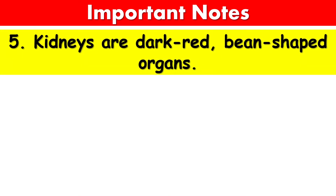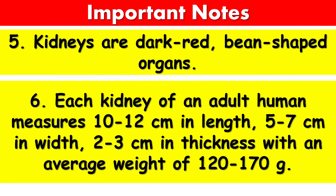Kidneys are dark red bean-shaped organs. Each kidney of an adult human measures 10 to 12 cm in length, 5 to 7 cm in width, and 2 to 3 cm in thickness, with an average weight of 120 to 170 grams.